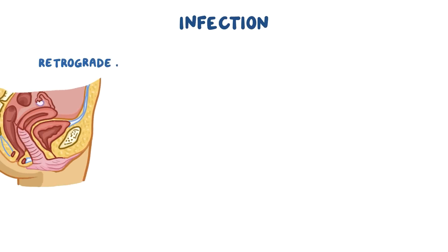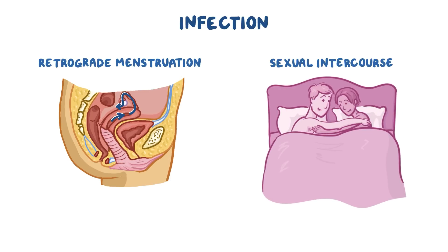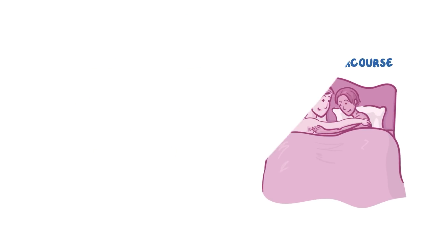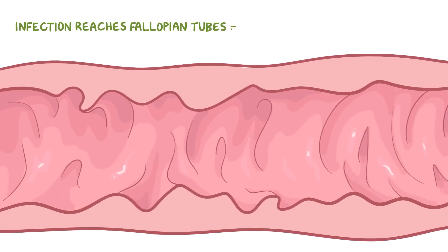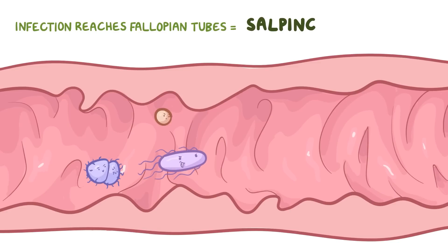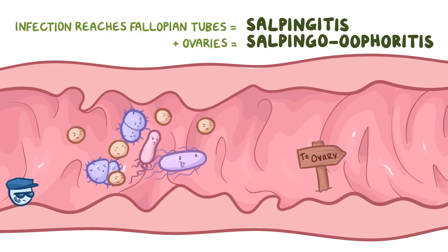Other factors contributing to an infection may be retrograde menstruation, which is when menstrual blood flows back through the fallopian tubes and into the pelvic cavity instead of out of the body, and also sexual intercourse. PID is most problematic when the infection reaches the fallopian tubes, in which case it's called salpingitis. If it also affects the ovaries, it's called salpingo-oophiritis.